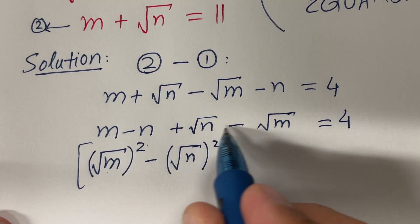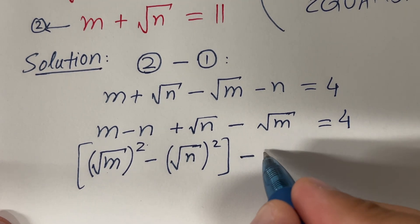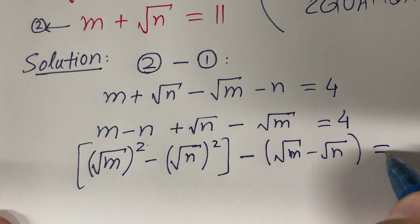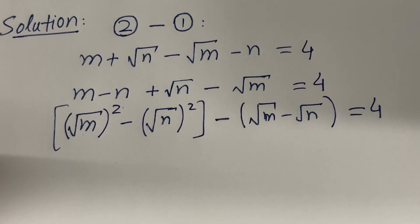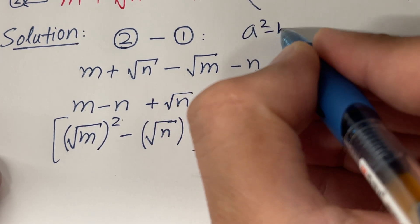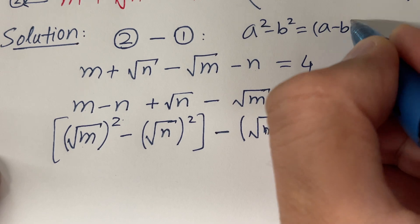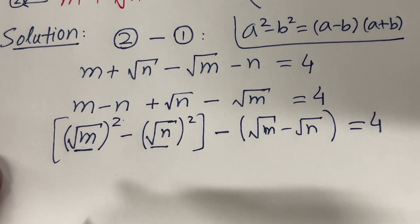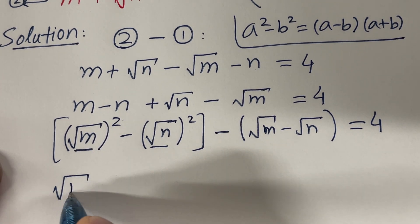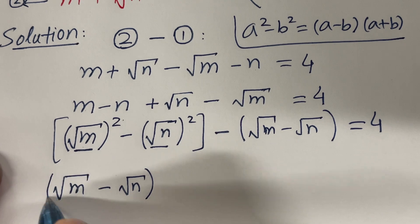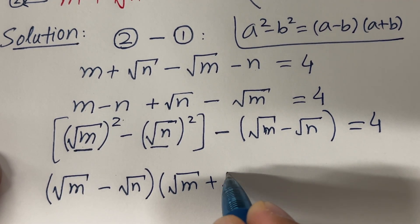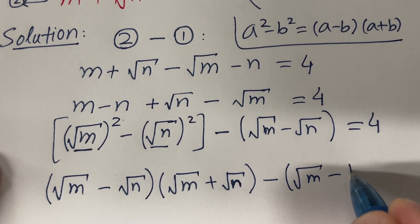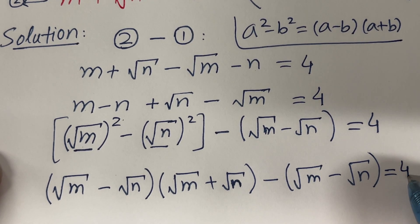If you look at it, we have m and n. So I can take out minus common, and I will have √m minus √n on the right hand side equal to 4. Now let me remind you the formula: a² minus b² equals (a minus b)(a plus b). Using this formula here, where a is one term and b is the other, we get the difference times the sum of those terms, giving us (√m minus √n) on the right hand side equal to 4.